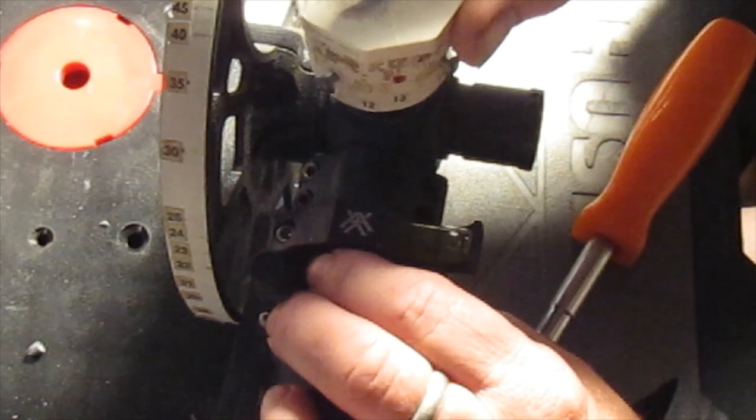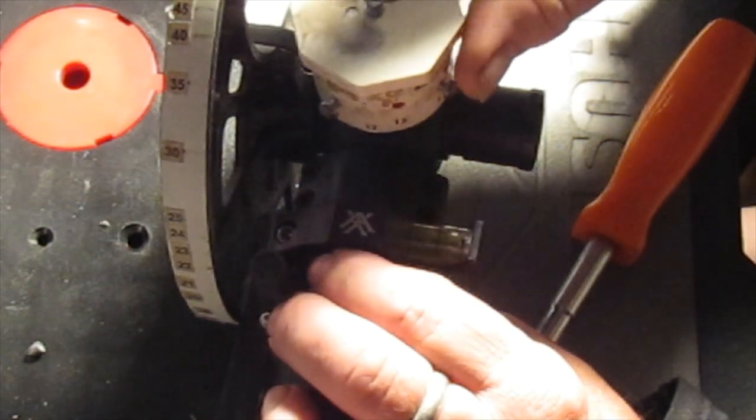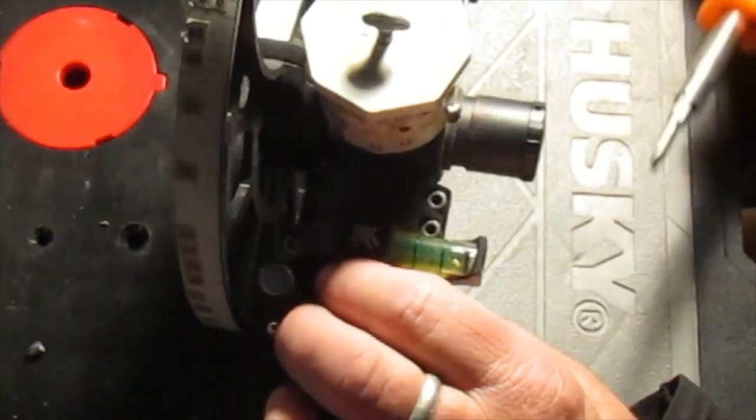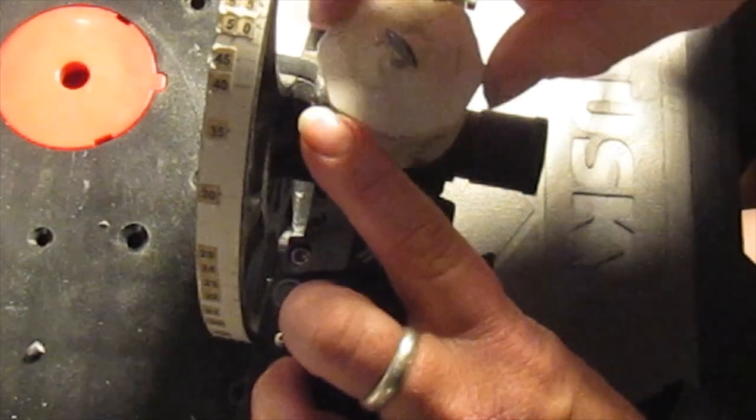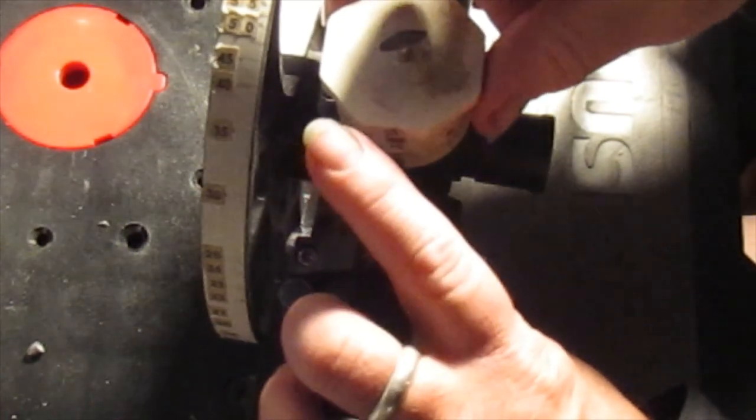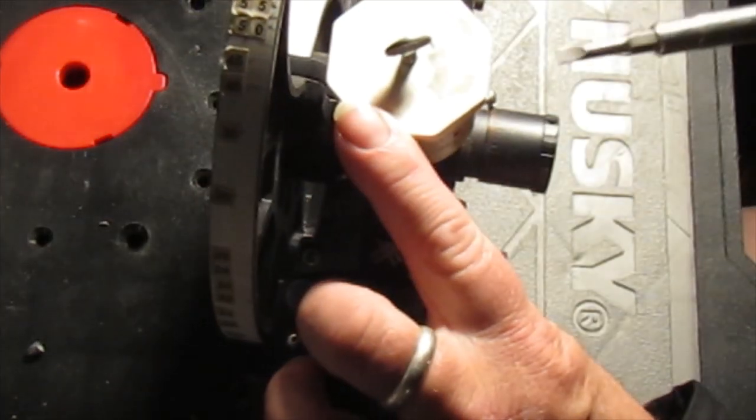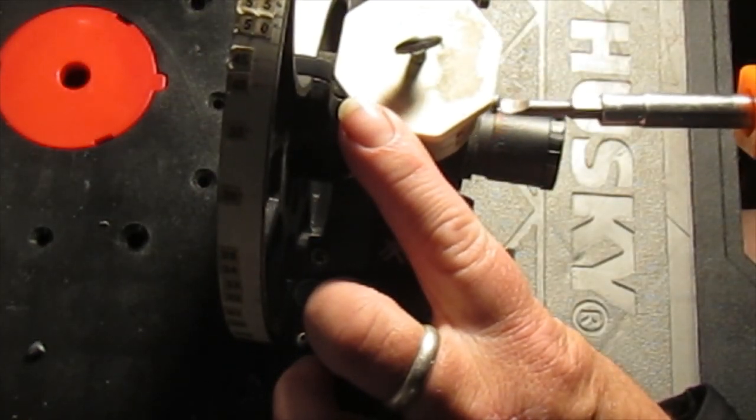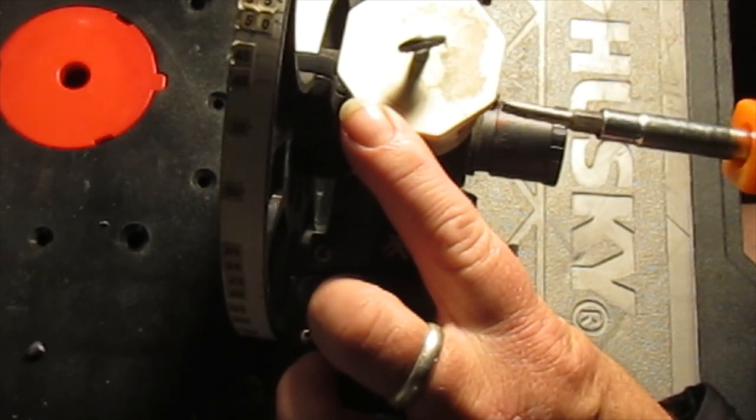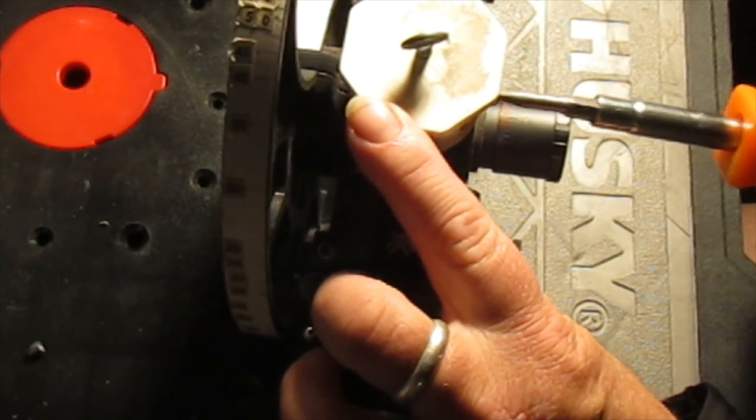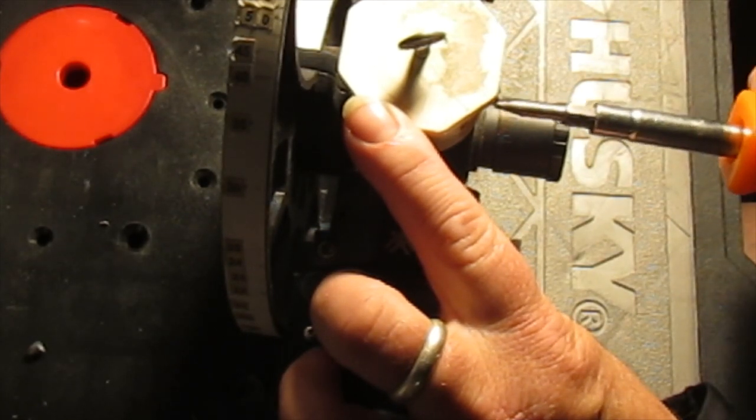Now what I do is I just put this over that nice and carefully, and then what I do is I have this pre-zeroed, so we're going to put this at where my zero was. All you do is just tighten these screws. We're going to do so carefully, it's going to take me a minute or so.